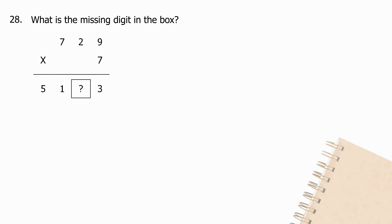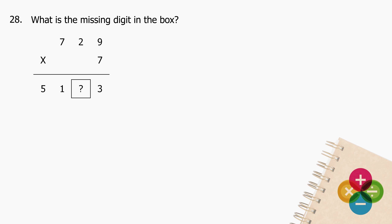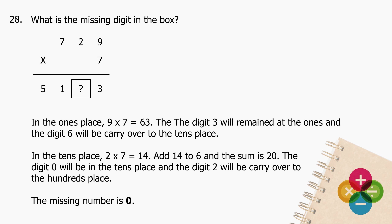Question 28: What is the missing digit in the box? 7_29 multiplied by 7 gives 5_1_3. In the ones place: 9 × 7 = 63; digit 3 stays, carry 6. In the tens place: 2 × 7 = 14; add 14 + 6 = 20; digit 0 stays in the tens place, carry 2. The missing digit is 0.